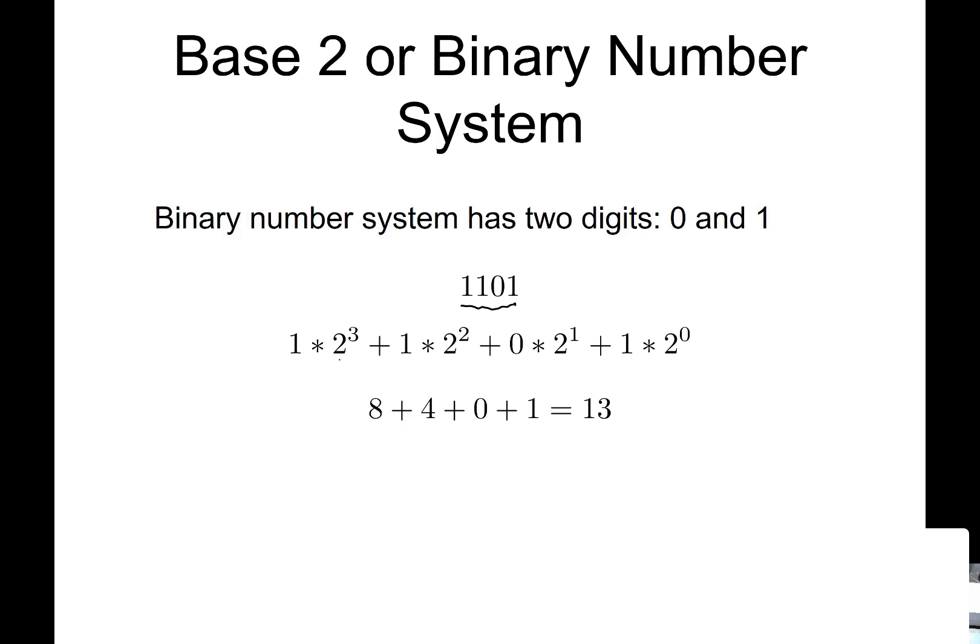So if we rewrite this, so for this number, this would be the 0 spot, 1, 2, and 3. So then I can write this, so I can expand this out, and this is actually how you figure out what your binary number is as well.